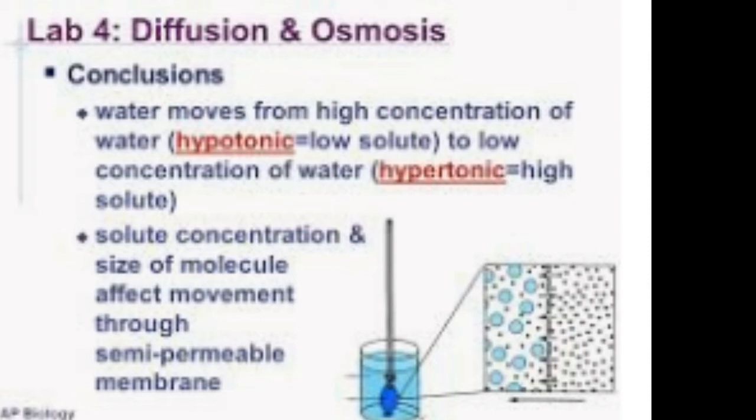In multicellular and higher organisms, the mechanism of transportation is much more elaborate. The process of diffusion, which is slow, cannot meet the requirement of transporting materials to all parts in a short period of time. In animals, transportation is carried out through the circulatory system. In higher plants, there are special tissues like xylem and phloem, also known as conducting tissues, which help in the transportation of materials.